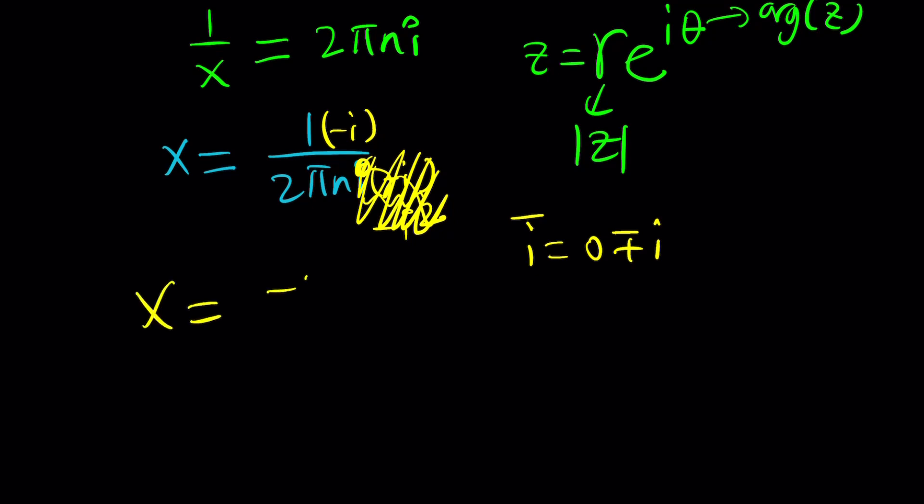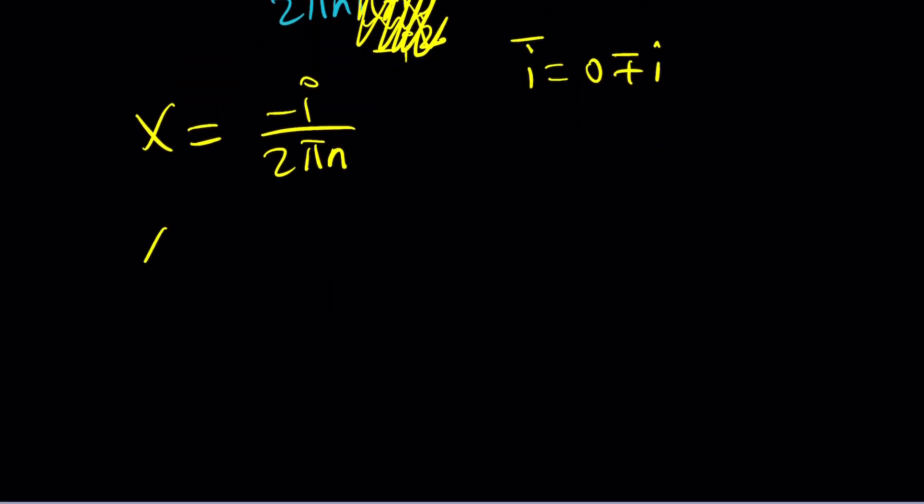And from here, x becomes negative i over 2πn. If you want to write it like a standard form, you could also write it as negative 1/(2πn) multiplied by i. So, the answer is imaginary. Not just complex, but it's imaginary. Its real part is 0.